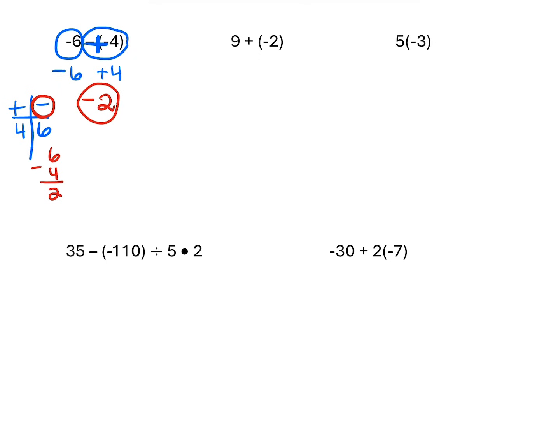Same signs we add; these were different signs, so this is different signs subtract. These are teams competing against each other, so they subtract. The answer is negative because six is larger.